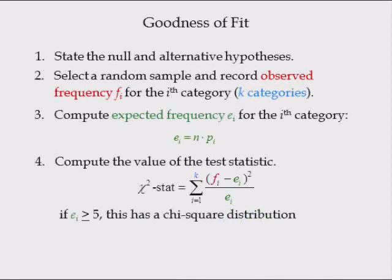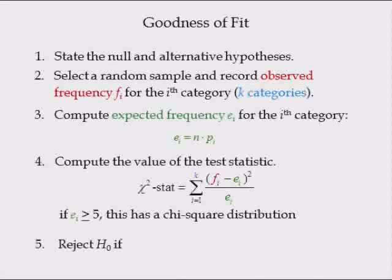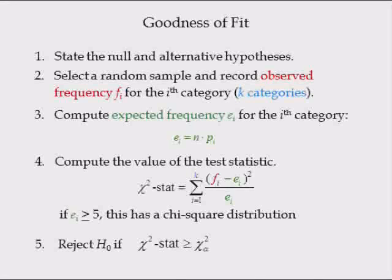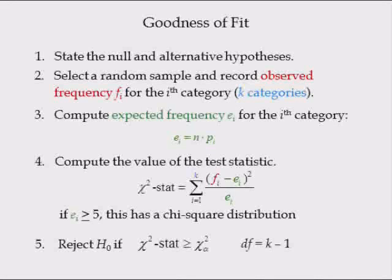If every expected frequency is at least 5, the chi-square stat has a chi-square distribution. The null hypothesis is rejected if the chi-square stat is large — specifically, if it is larger than the critical value denoted chi-square subscript alpha. The critical value is found in the chi-square distribution table in the column corresponding to significance level alpha, and the row corresponding to the degrees of freedom, which equal the number of categories k minus 1.